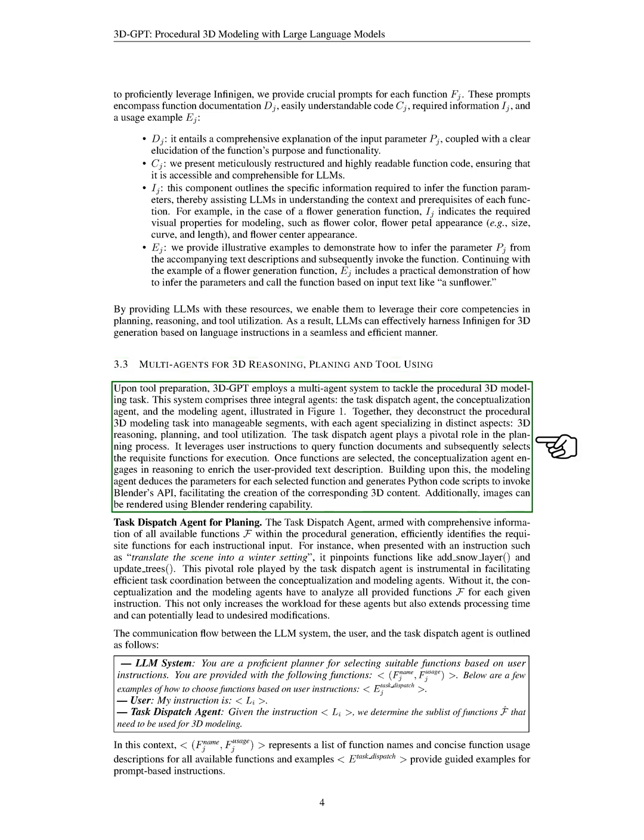The 3D generative pre-training transformer, 3D GPT, uses a multi-agent system to handle the complex task of procedural 3D modeling. This system is made up of three key agents: the task dispatch agent, the conceptualization agent, and the modeling agent. Each agent has a specific role to play in the process: 3D reasoning, planning, and tool usage.